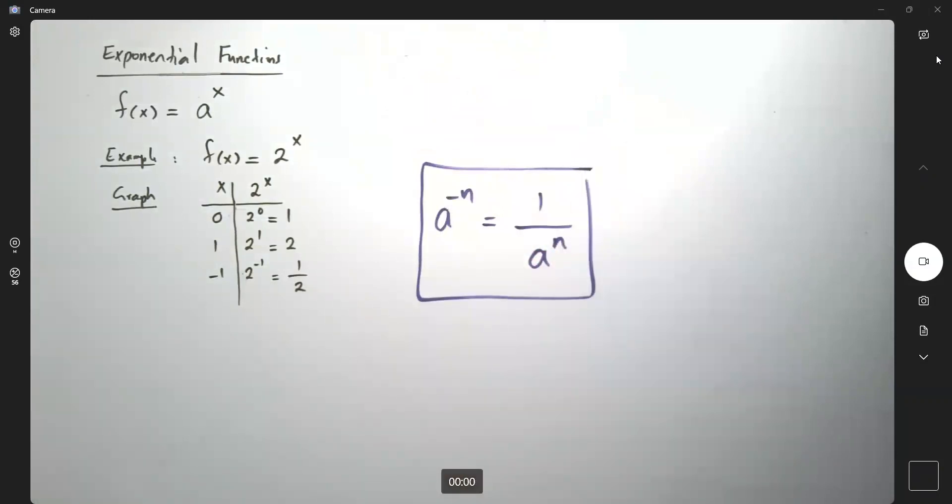Very good. So what if I plug in, for example, 2? If I plug in 2, I get 2^2 or 4. If I plug in negative 2, I get 2^(-2) or 1/2^2 or 1/4.